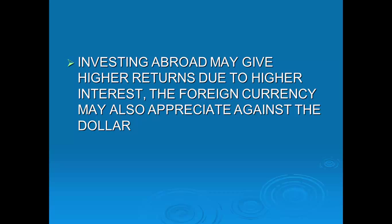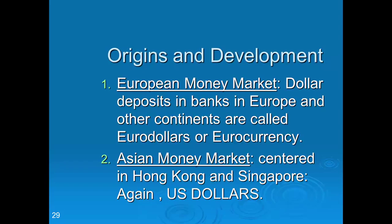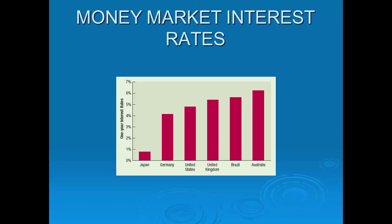When you go abroad, you see different markets. The European money market involves dollar deposits in Europe and other continents, typically referred to as Eurodollars or Eurocurrency. The Asian money market is centered in Hong Kong and Singapore, where transactions also typically take place in US dollars. A graph of global interest rates shows Japan below 1%, Germany around 4%, the UK at 5%, Australia at 6%, and so on — large differences exist worldwide.